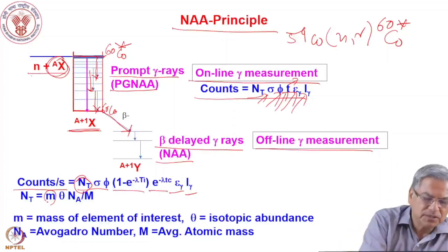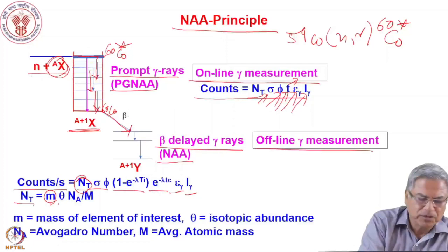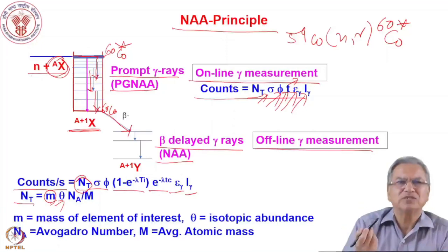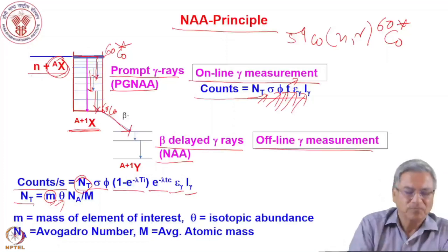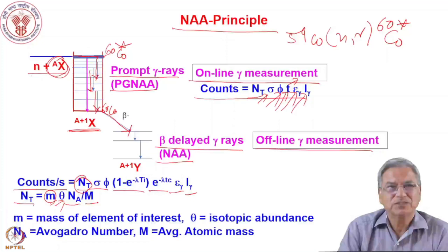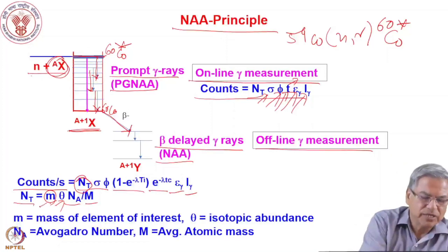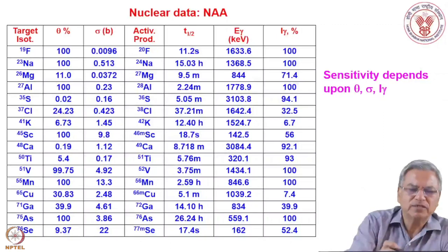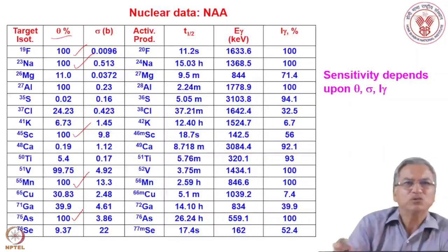From the number of target atoms you can determine the concentration — the mass m of the element of interest. For multi-isotopic elements like tin or iron, the isotopic abundance theta must be accounted for, and the average atomic mass differs from the mass number. The sensitivity of detection depends on isotopic abundance, the capture cross section, and the gamma ray intensity. For mono-isotopic elements like cobalt, arsenic-75, manganese-55, scandium-45, sodium-23, and aluminium, all abundance is 100%, giving higher sensitivity. Elements with even Z have more than one isotope, so their abundance varies.